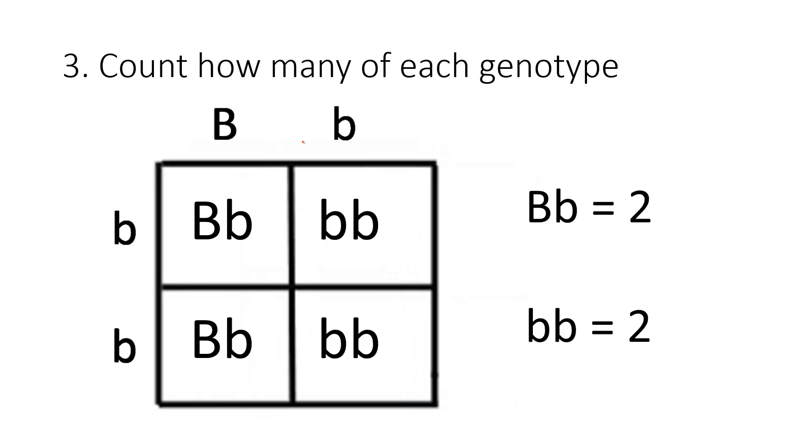Now I'm going to count how many of each genotype I have inside the Punnett square. I can see here that I have two uppercase B, lowercase b genotypes and two lowercase, lowercase genotypes. So big B, little b, there's two of those, and then little b, little b, there's two of those.